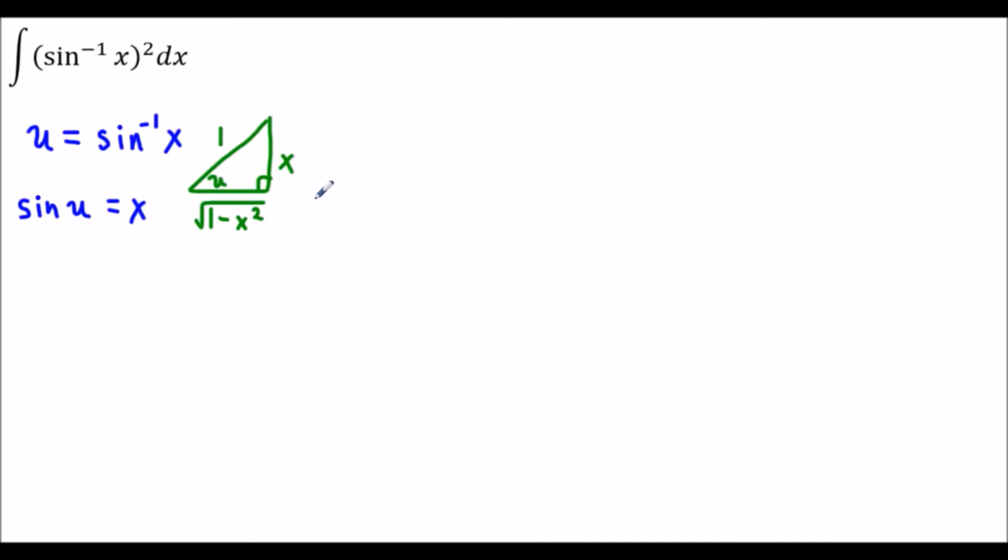We're going to need this information later on but for now we're just going to leave it off to the side. Now we could start taking the derivative of u. We'll have du equals the derivative of sine inverse x which is 1 over the square root of 1 minus x squared times dx.